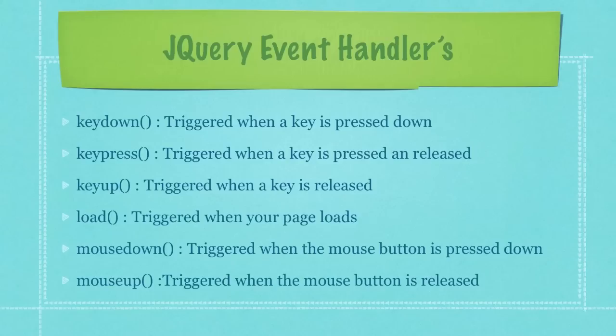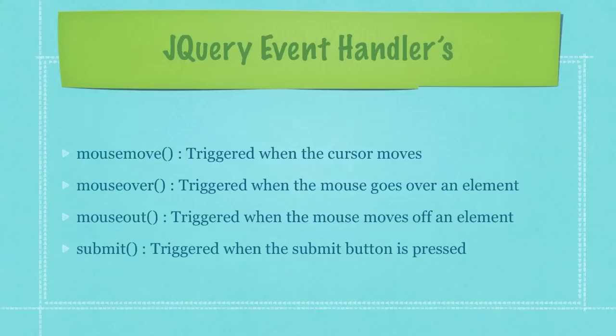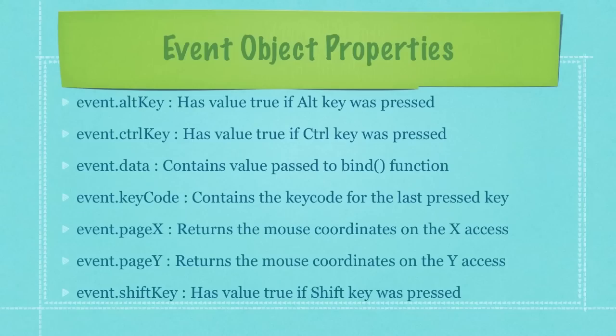Mouse down is triggered when the mouse button is pressed down. Mouse up is triggered when the mouse button is released. Mouse move is triggered when the cursor moves. Mouse over is triggered when the mouse goes over an element. Mouse out is triggered when the mouse moves off of an element. Submit is triggered whenever the submit button is pressed.